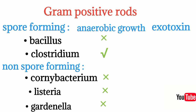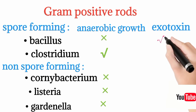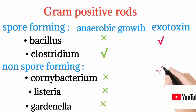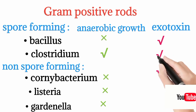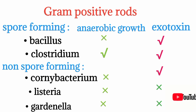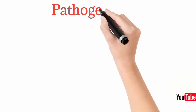Another property is exotoxin production. Exotoxin is a harmful chemical substance secreted by bacteria that may be responsible for pathogenesis in living organisms. Bacillus, Clostridium, and Corynebacterium all produce exotoxin, but Listeria and Gardnerella do not.